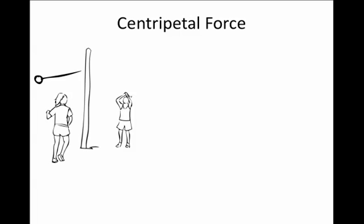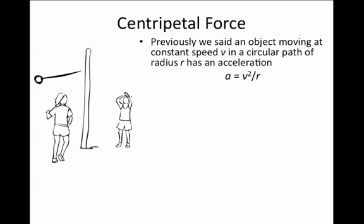We're going to talk about a different subject today called centripetal force. Previously, we said when an object is moving at constant speed but in a circular path of radius r, it has an acceleration. And the magnitude of that acceleration is v squared over r.